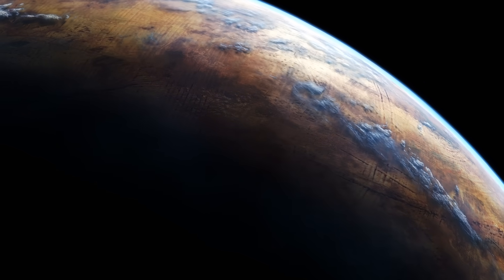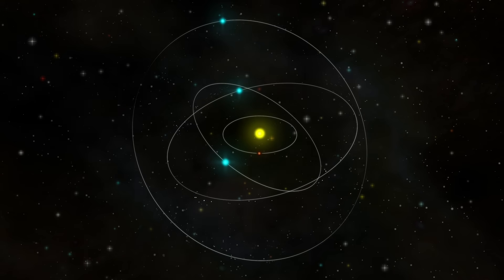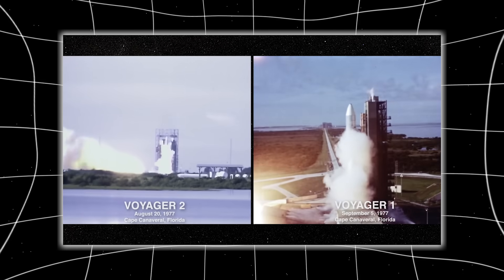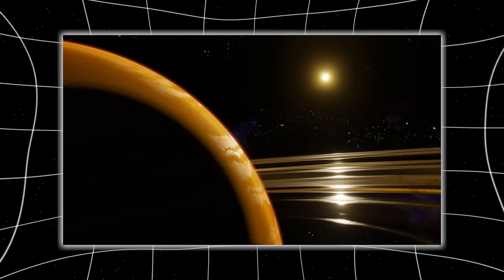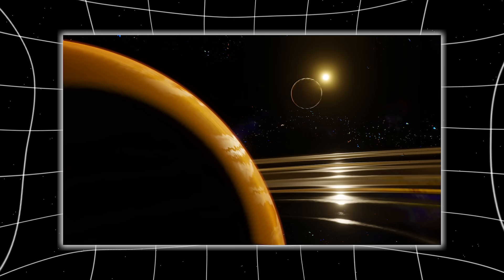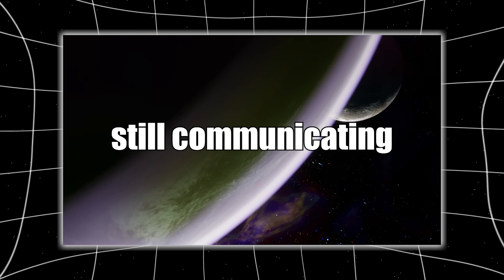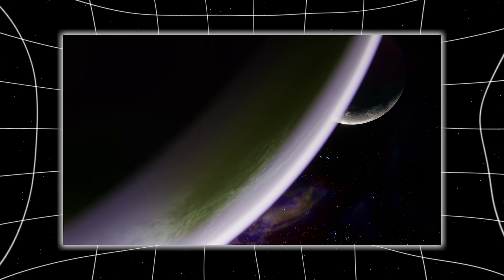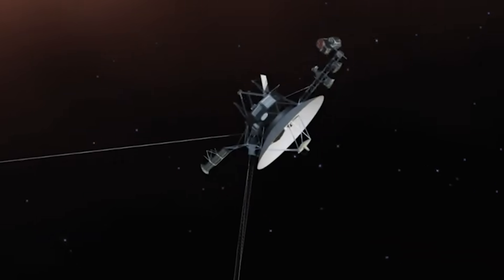Voyager 1 was never supposed to live long enough to see the edge of the solar system, let alone cross it. When NASA launched Voyager 1 and Voyager 2 in 1977, the mission was designed to last just four years, long enough to perform flybys of Jupiter and Saturn. Yet more than 45 years later, the spacecraft is still communicating, still operating instruments, still sending data across a gulf of space so large that each signal takes over 18 hours to return home.